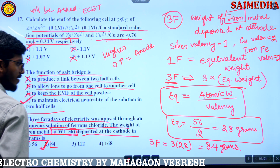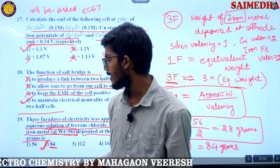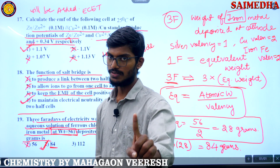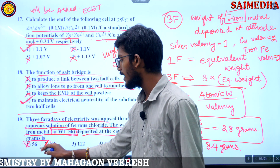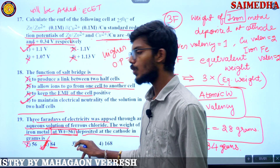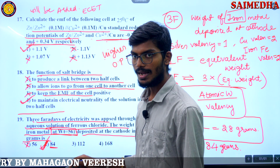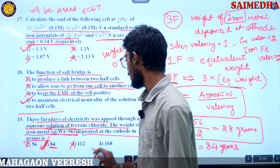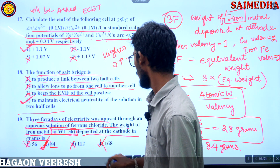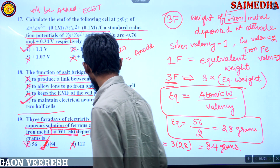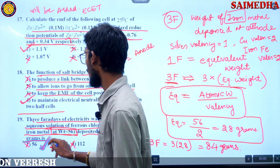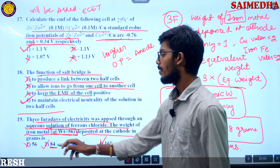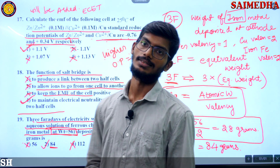56 grams is the atomic weight — that means 2 Faradays gives 56 grams, since 1 Faraday gives 28 grams. 3 Faradays gives 84 grams, which is our answer. Option B, 84 grams, is the correct answer.